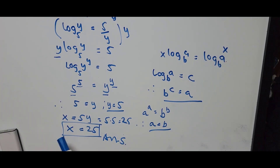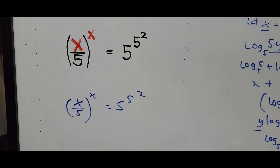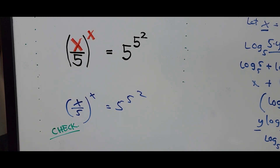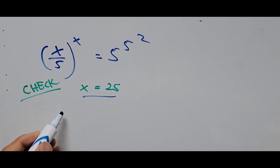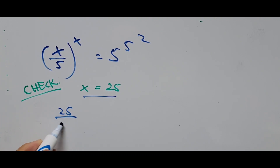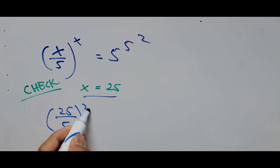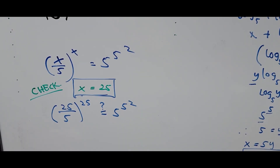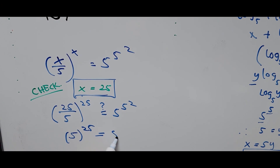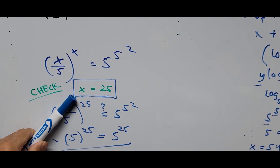Let's check our answer by substituting x equals 25 into the original equation. That is: 25 divided by 5, raised to the power of 25, equals 5 raised to 5 squared. Since 25 divided by 5 is 5, we get 5 raised to 25, equals 5 raised to 5 squared, which is 25. This confirms that x equals 25 is the correct answer.